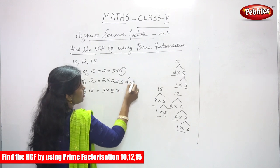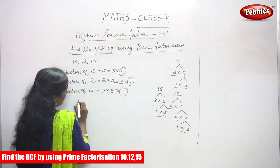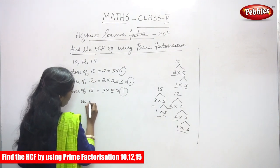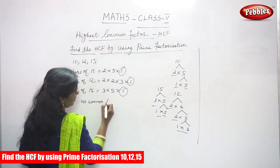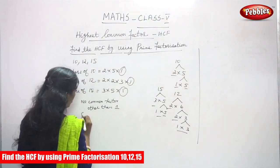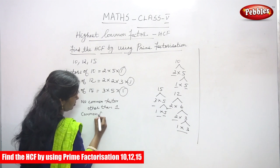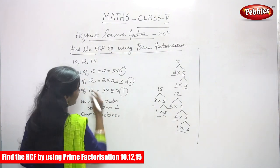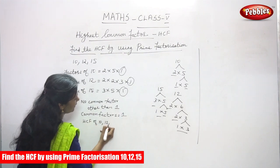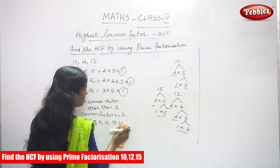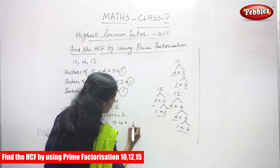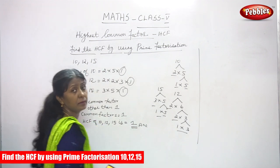So you will circle the common factor, which is only 1. If there is no other common factor other than 1, you consider 1 as the common factor. The common factor for these numbers is 1, so the HCF of 10, 12, and 15 is 1. This is the answer.